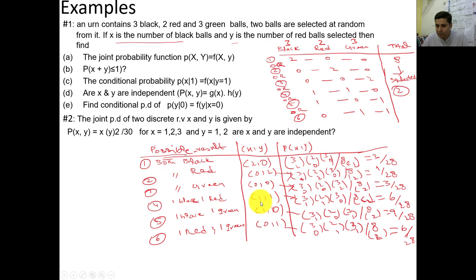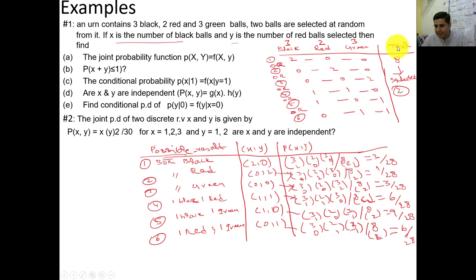(4) One black, one red: x=1, y=1. P = C(3,1)·C(2,1)·C(3,0) / C(8,2) = 6/28. (5) One black, one green: x=1, y=0. P = C(3,1)·C(2,0)·C(3,1) / C(8,2) = 9/28. (6) One red, one green: x=0, y=1. P = C(3,0)·C(2,1)·C(3,1) / C(8,2) = 6/28. These are all 6 possible outcomes when 2 balls are drawn from the urn.